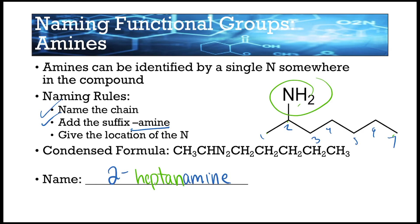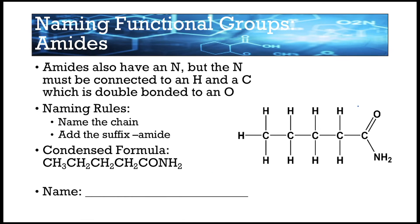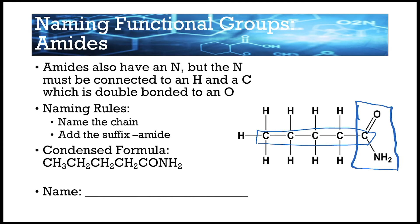Almost done. Next is amides — another one with nitrogen, but it has more to it than an amine. Amides have a C double bond O and an NH2. When naming, start by naming the chain: five carbons is pent-, single bonds gives -an-, and then for amides we literally write amide. So we get pentanamide. We don't need to give the location because this only happens at the end of the compound.